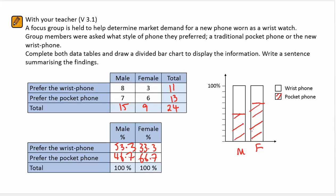Now writing a summary sentence: there's no real discernible preference for the males. However, for females, females seem to prefer the pocket phone over the wrist phone by a ratio of two to one.